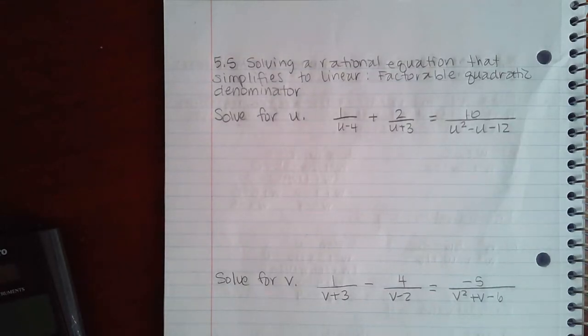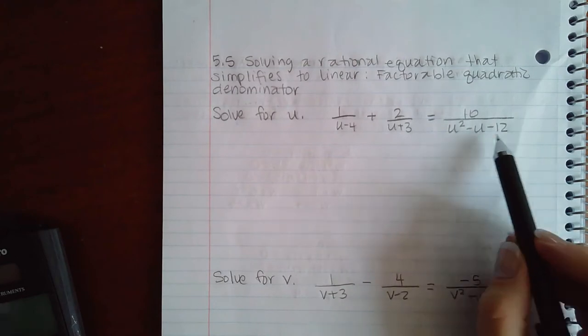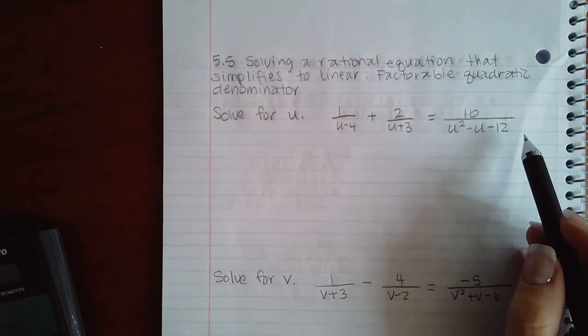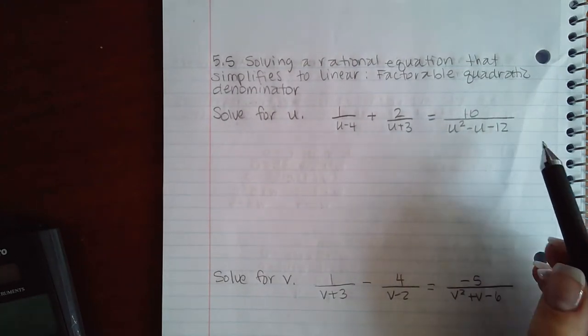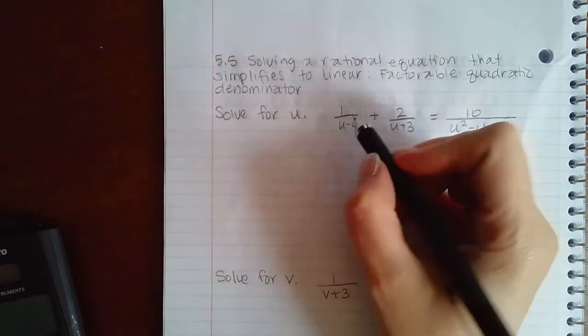Here we have 5.5 solving a rational equation that simplifies to linear factorable quadratic denominator. We have to figure out what the LCD is, but we cannot figure it out when this denominator is not factored because how do we find the LCD? It's the factors that are in common and then the factors that are different.